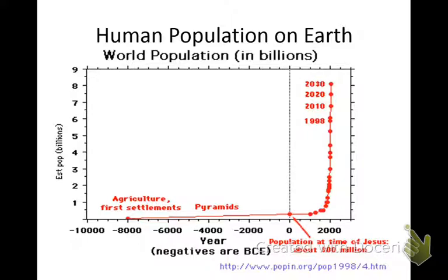I took a class in college called biology conservation, and it seemed like the teacher talked about China all the time — how China was overpopulated and polluted because of all the people. All the people make trash, and in a place where there's so many people, there's nowhere to put the trash. Anytime I think of density, I think of China and that teacher.